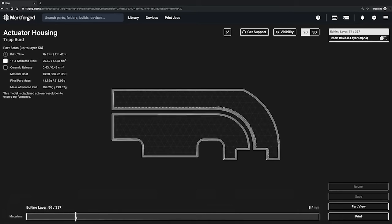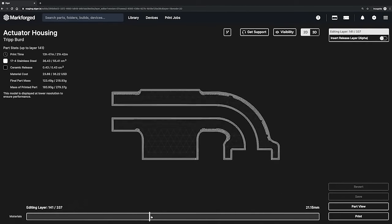As we go through printing, washing, and sintering, Eiger will monitor the parts progress along the way. Let's start this print and go to the Metal X.